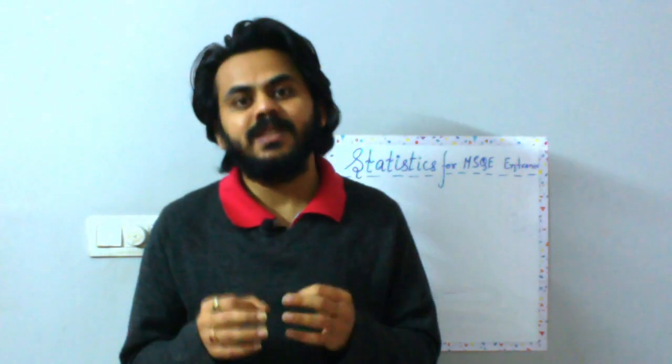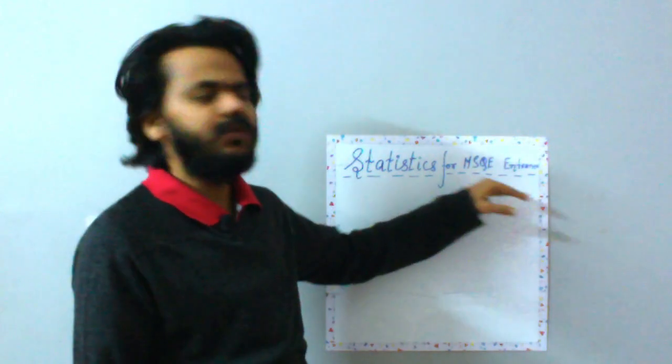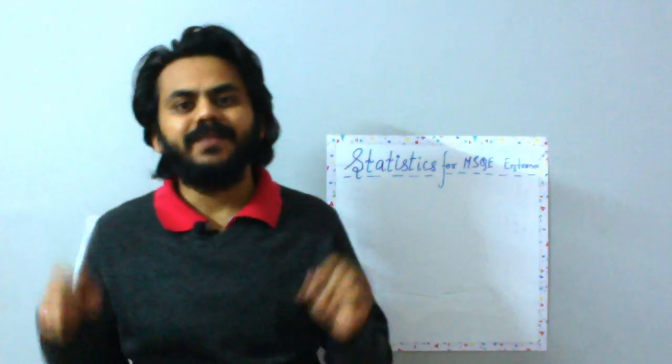When I talk about statistics for MSQE entrance, you need to understand that MSQE entrance, IGIDR entrance, and DSE entrance all have different scopes of statistics. That is why I will cover statistics for MSQE separately from DSE, because DSE has an econometrics part as well. For ISI entrance or MSQE entrance, you do not need econometrics — you just need a few elementary statistics topics.